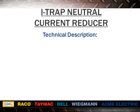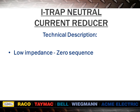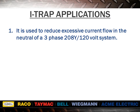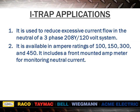Next, we'll discuss the I-TRAP neutral current reducer. The technical description of an I-TRAP neutral current reducer is that it is a low impedance, zero sequence, auto zigzag transformer. It is used to reduce excessive current flow in the neutral of a three-phase 208-delta/120-volt system. It is available in amp ratings of 100, 150, 300, and 450.